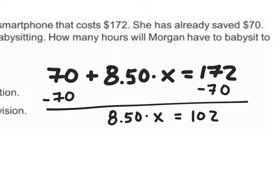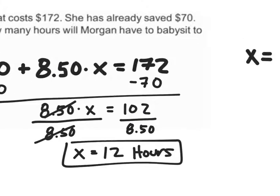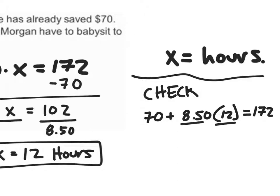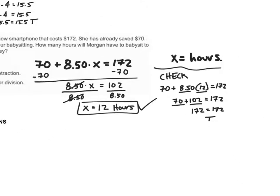I'm going to first subtract 70 to isolate that value, leaving 8.50 times x is equal to 102. Because I'm multiplying both sides by 8.5, I want to divide both sides by 8.50. These divide out, so x equals 102 divided by 8.5, which gives me x is equal to 12. So 12 hours that we would need to work. Let's check: 70 plus 8.50 times 12 — 8.5 times 12 gives me 102, and 70 plus 102 gives me 172 equals 172 — that is a true statement, therefore we have answered this correctly.